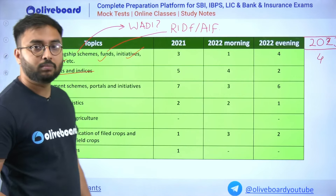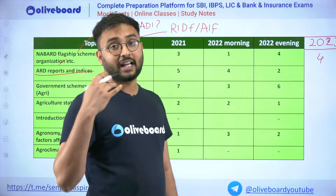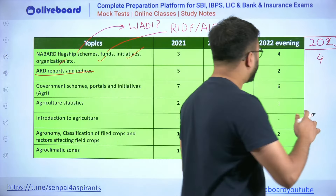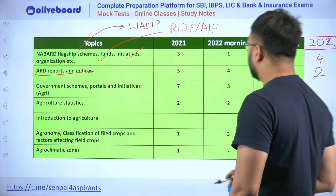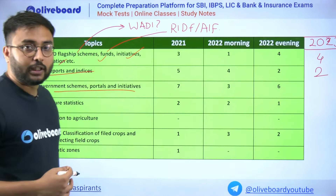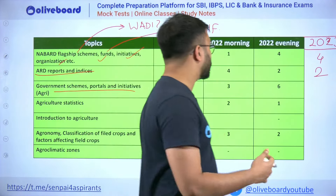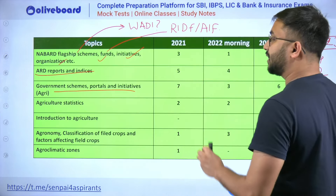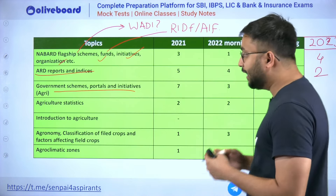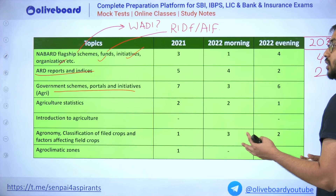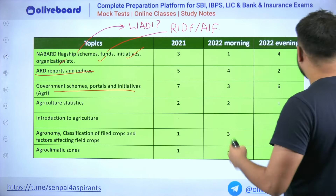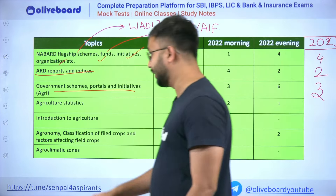ARD reports and indices — it may be handloom census, animal husbandry related stats, or agricultural census. Any type of such report will always yield two marks; in 2023, two questions came. Government schemes, portals, and initiatives from the Ministry of Agriculture — whatever schemes and portals are there, such as ENAM, GEM, eKrishi, and Meghdoot app — almost three questions came in 2023.